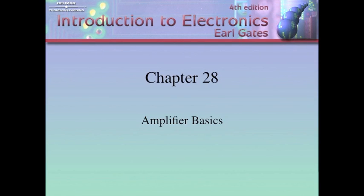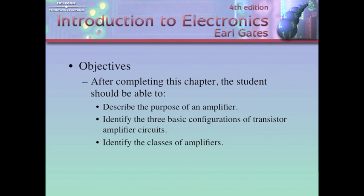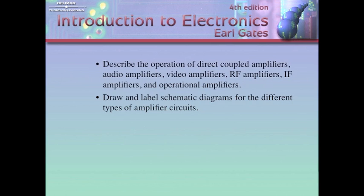Chapter 28, Amplifier Basics. After completing this chapter, you're going to be able to describe the purpose of an amplifier, identify the three basic configurations of transistor amplifier circuits, identify the classes of amplifiers, describe the operation of direct coupled amplifiers, audio amplifiers, video amplifiers, RF amplifiers, IF amplifiers, and operational amplifiers. Draw and label schematic diagrams for the different types of amplifier circuits.